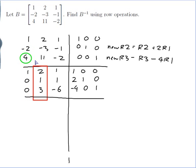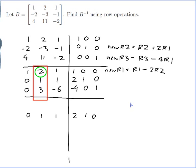Now I move on to the next column and try to put a column of the identity there. The next column has a 1 in the middle, which I already have. So I want to produce a 0 here and here. To put a 0 here, my new row 1 is row 1 take 2 of row 2. I'm not going to change the middle row. So: 1 minus 2×0 is 1; 2 minus 2×1 is 0; 1 minus 2×1 is negative 1; 1 minus 2×2 is negative 3; 0 minus 2×1 is negative 2; 0.